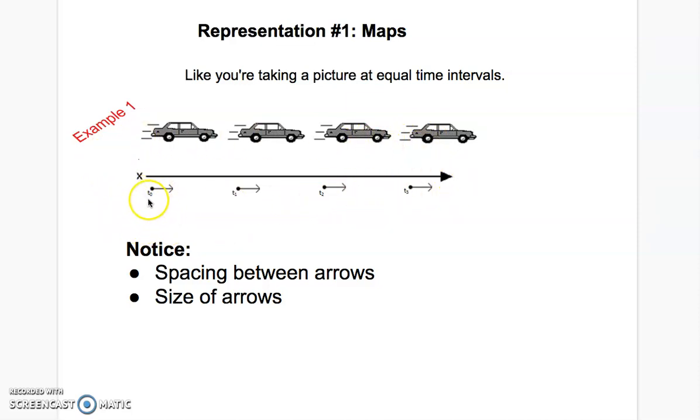And so you notice that there's these little tiny labels, T0, T1, T2, T3, and that there's spacing between the arrows. So the arrow, the location of the little dot is showing the location of the back of the car, or the location of the object. The size of the arrow, notice the size is the same on each one of these, is showing us how fast the car is moving. So here the car's velocity or its speed, either one, is staying the same.